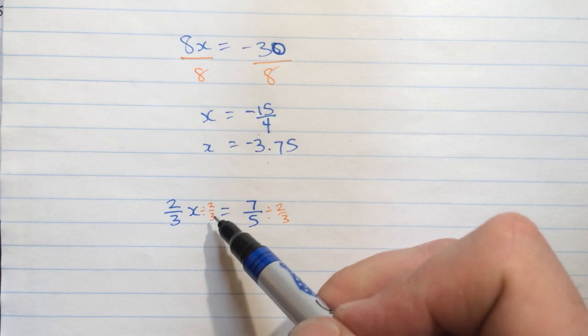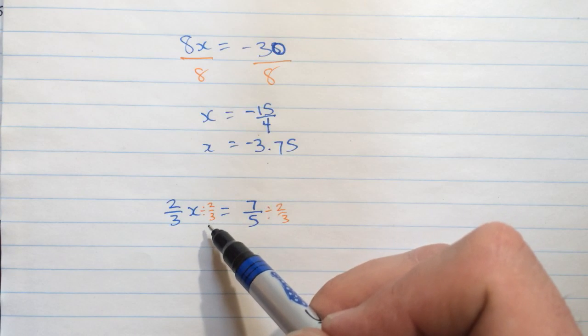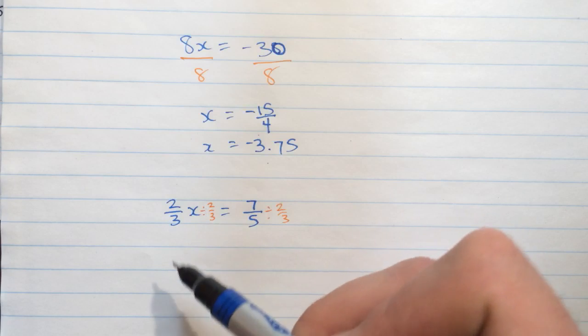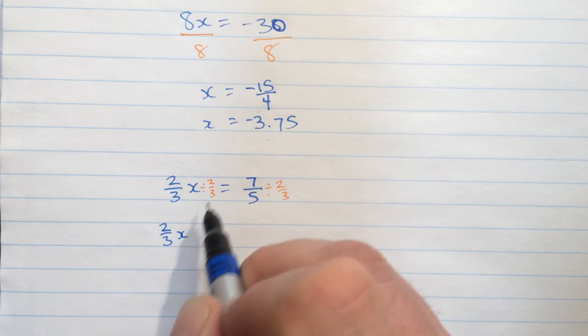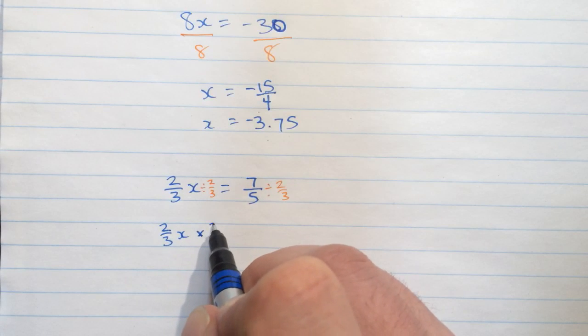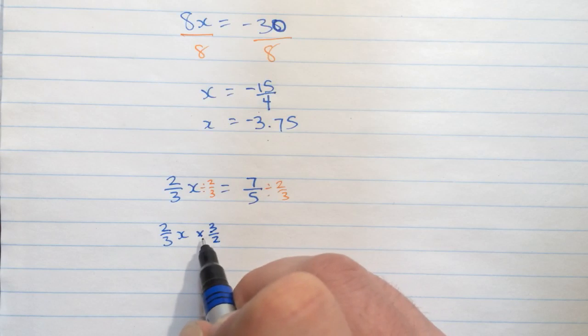But when we do division of a fraction, to make this practical, we usually do multiplication of the reciprocal. Let me just write that out. 2 thirds of x. Instead of dividing by 2 thirds, we will multiply by 3 halves.